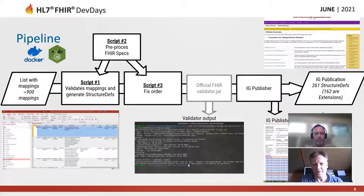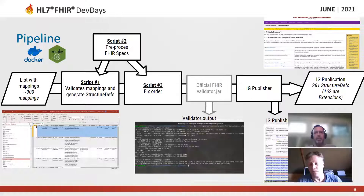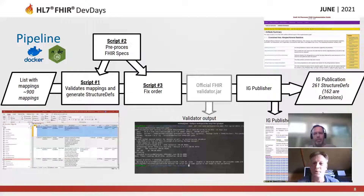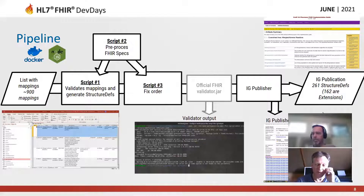Script one is a Node.js script that takes the list rows from the Excel — basically mappings from Vista files, fields, and fixed values as Jay showed in the table — and generates structure definitions that are then input for the IG publisher. This initially resulted in a long list of errors and warnings, and it even crashed the IG publisher with big exceptions. That had to do with development of the IG publisher but also with things we put in because they were generated from the Excel. So we had to figure out what caused all the errors and how to fix them or prevent them, or give guidance on how to fix them in the tables.